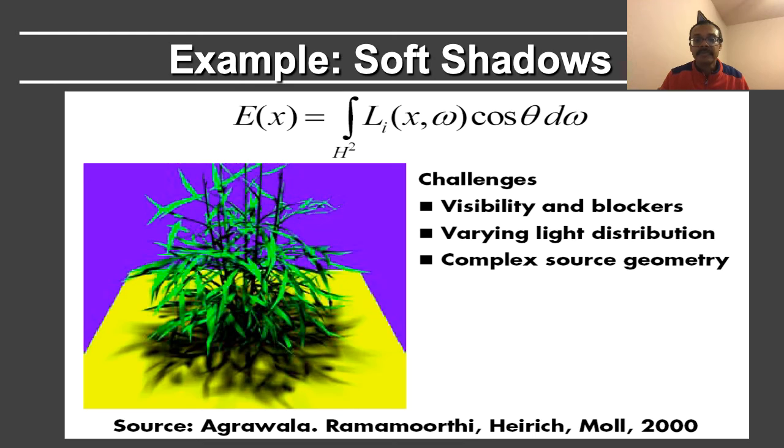I will put up this slide showing this image of the plant that I rendered in a SIGGRAPH paper 20 years ago. You will notice that there are very nice soft shadows here. It is obtained by integrating the area light source and handling challenges such as visibility, blockers, and varying lighting distributions over the source. In this homework assignment, we will assume a uniform source.